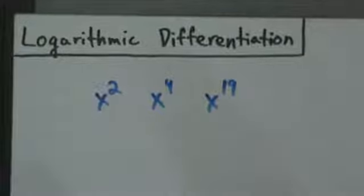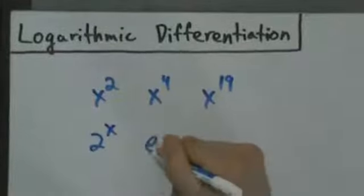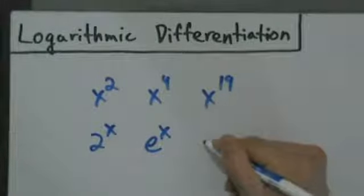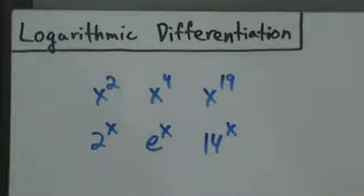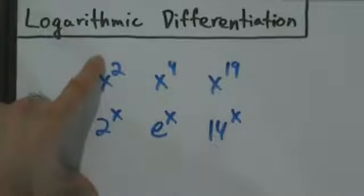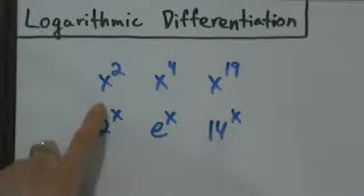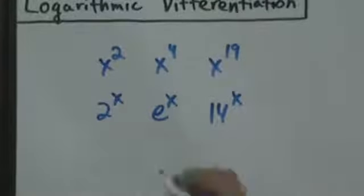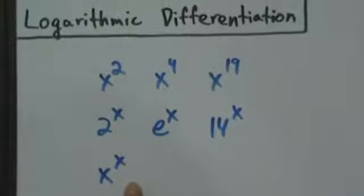We also know how to take the derivative of things like 2 to the x, e to the x, 14 to the x, and stuff like that. Here x is in the base — a variable in the base and a constant in the exponent. Here we have a constant in the base and a variable in the exponent. What if we have a variable in both the base and the exponent? What about something like x to the x? Well, that's when we have to use logarithmic differentiation.